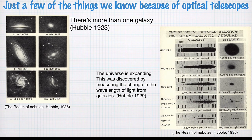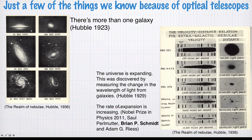Controversially, Hubble never won the Nobel Prize, because at the time he did his work and up until his death, the Nobel Prize in Physics was not allowed to be given to astronomers. That has now changed. Another discovery along these lines is that the rate of expansion is increasing — not only is the universe expanding, but the rate at which it's expanding is increasing. This got the Nobel Prize for Physics in 2011, and one of the recipients was our very own Vice-Chancellor, Brian Schmidt.